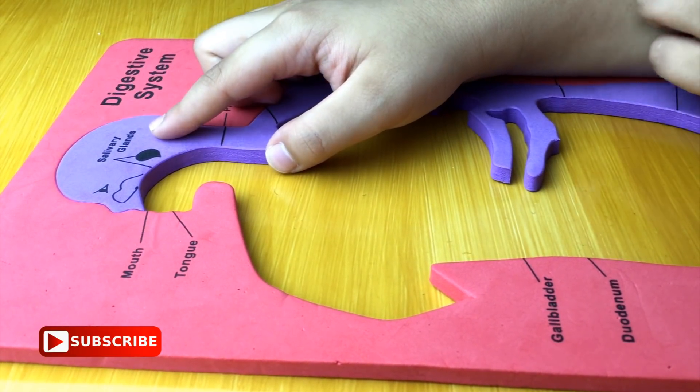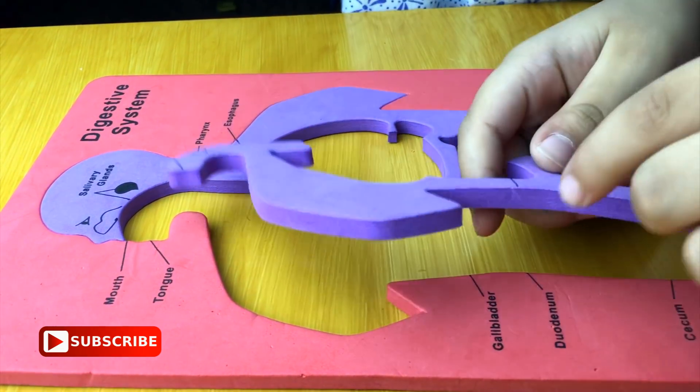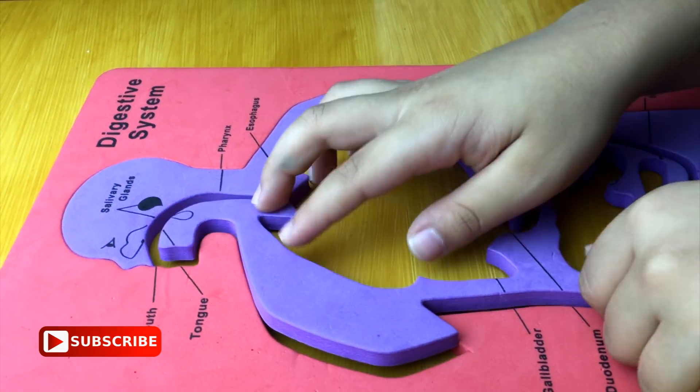This is the salivary glands. And then you put the other half of the body.